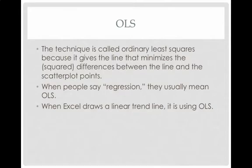It's called ordinary least squares because it gives the line that minimizes the square differences between the line and the scatter plot points. When people say regression, they usually mean OLS.